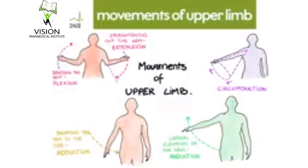Next is medial rotation: when the arm rotates medially, bringing the flexed forearm across the chest. And lateral rotation: when the arm rotates laterally, taking the flexed forearm away from the body. Next is supination: when the palm is facing forwards or upwards, as in putting food in the mouth, it is called supination. Pronation is the opposite of supination: when the palm faces backwards or downwards, as in picking food with fingers from a plate.